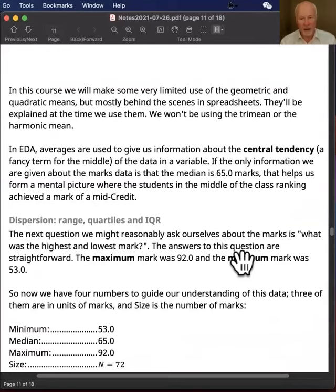Now, what averages are used for in exploratory data analysis is to give us information about what's called the central tendency, which is a fancy name for the middle of the data in a variable. So the idea is that you can represent the data in a variable by its middle or its central tendency, and that's what averages are meant to represent.